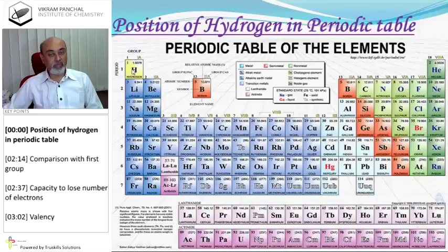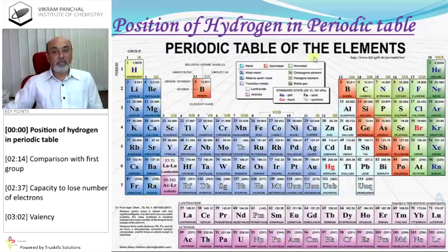Hydrogen is placed with the first group, that is, lithium, sodium, potassium, rubidium, cesium, and francium.